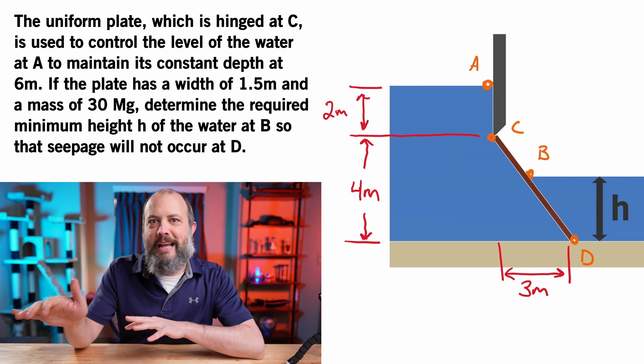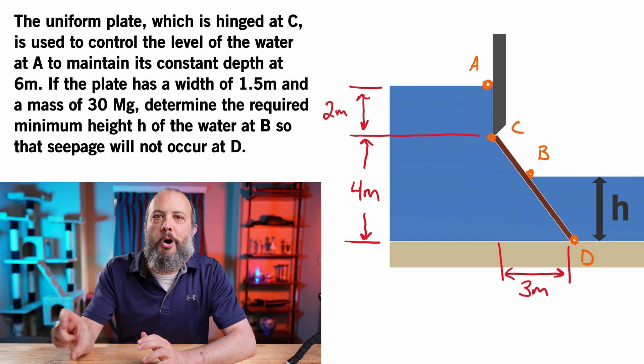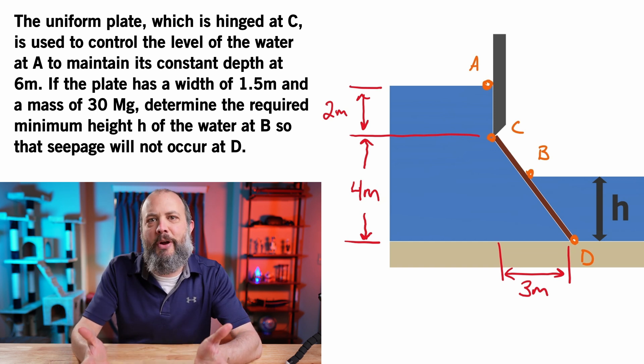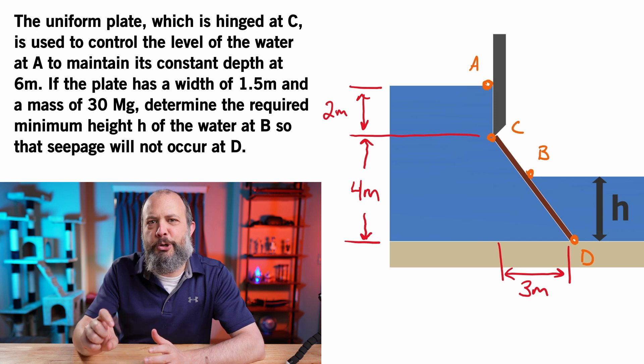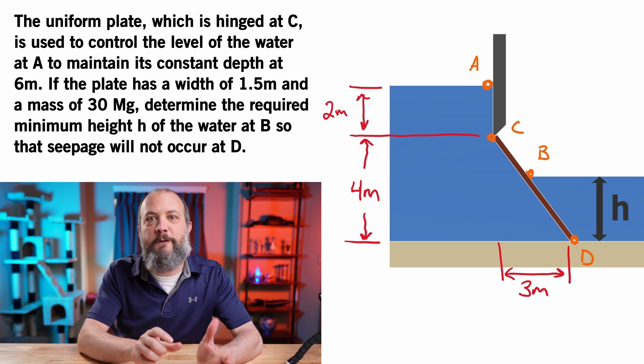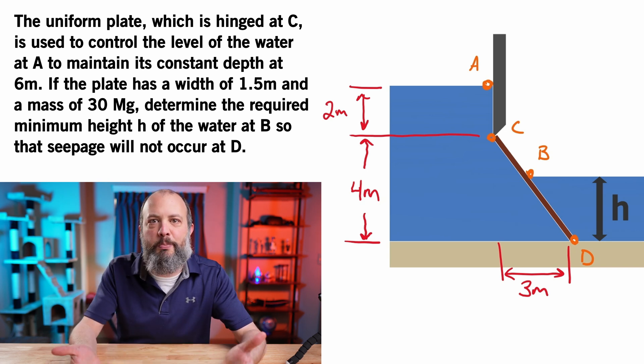But on the right hand side, the gate is being held shut by an unknown height of water that's pushing downwards and to the left on the gate. And that's what we're trying to find - what is the critical height H that will cause this gate to stay shut in order to avoid seepage underneath the gate, which would happen if it started to open.